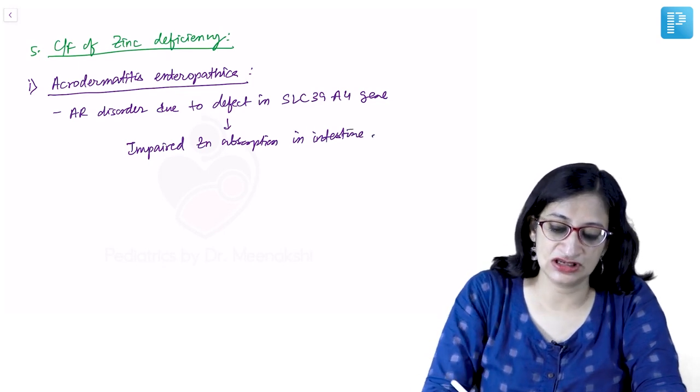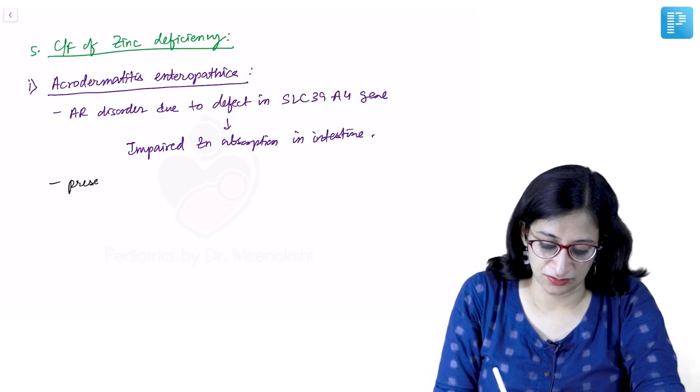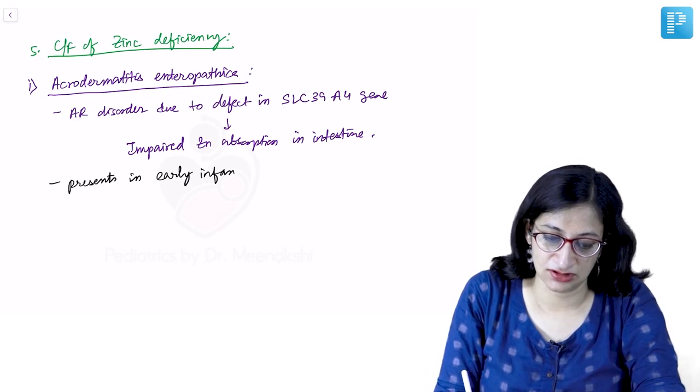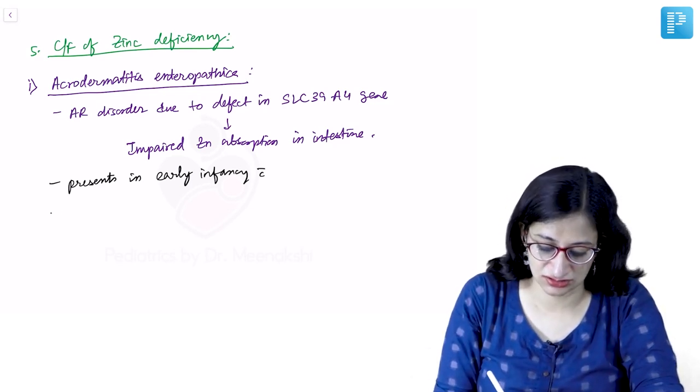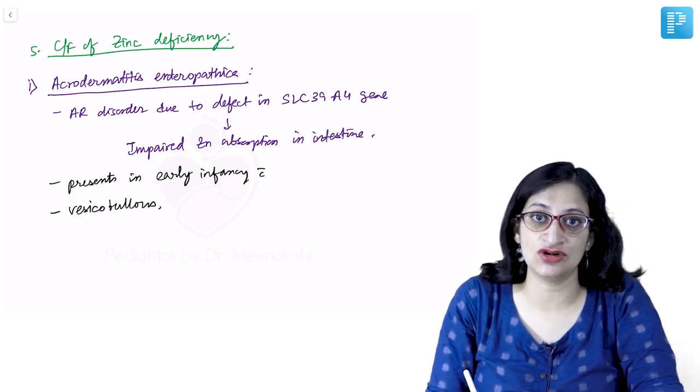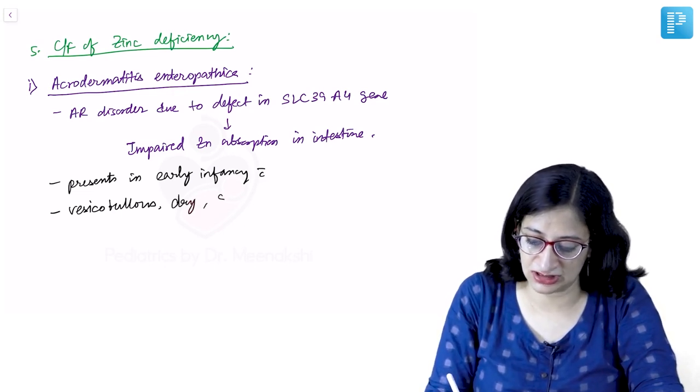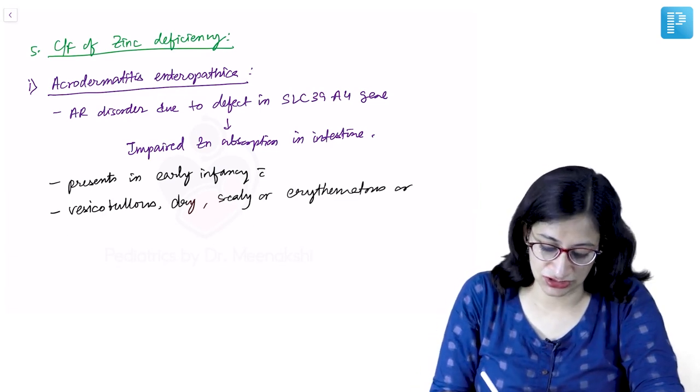So it can present in early infancy with vesicobullous dry scaly lesions. It can present in early infancy with vesicobullous dry, scaly, erythematous or eczematoid lesions.